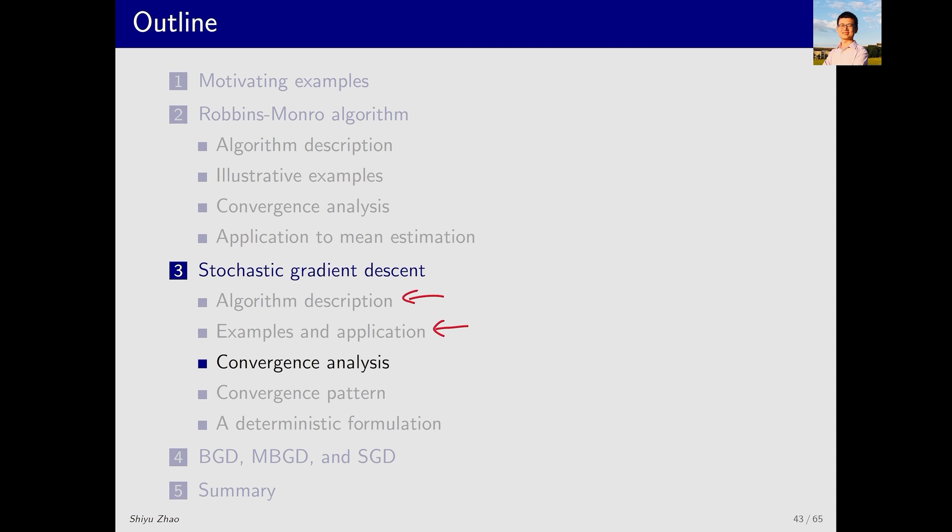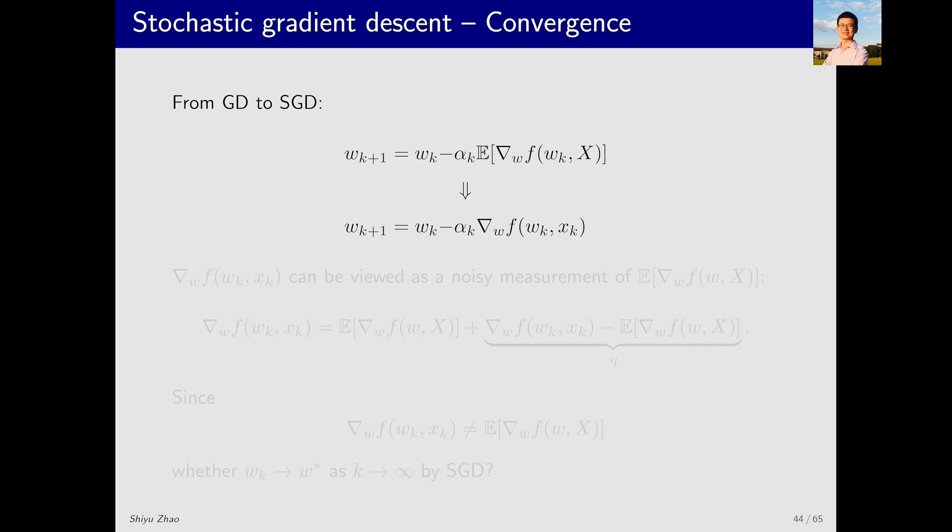Next let's discuss the convergence of the SGD algorithm. Why is SGD effective? The basic idea of SGD comes from GD, that is gradient descent. Here the expectation E is unknown, so we simply remove it and approximate with this sample, which gives us SGD.